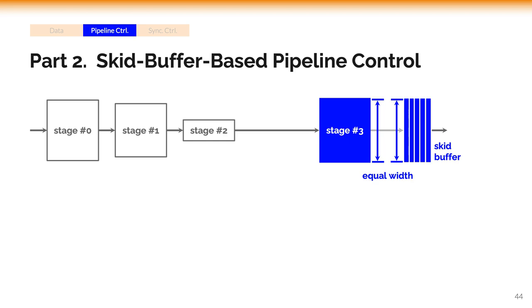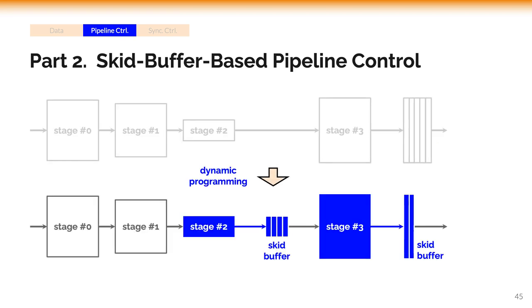Note that the buffer introduces additional area overhead. This buffer must have the pipeline output's width. Therefore, we further seek to minimize the overhead. Since the pipeline width is different on each stage, we split the pipeline into multiple parts and add the buffers separately. The optimal configuration is found via dynamic programming.